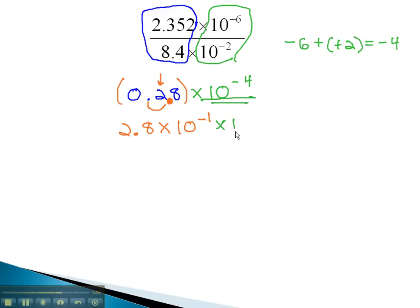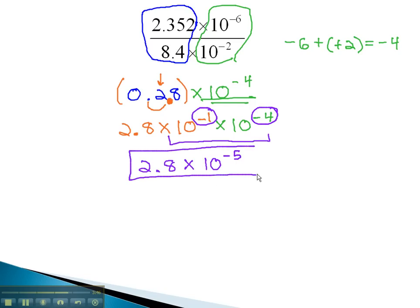We still have the times 10 to the negative 4 at the end, and we can finally combine the tens together using our exponent properties. This gives us 2.8 times 10, and when we add the exponents, negative 1 and negative 4, we get negative 5. 2.8 times 10 to the negative 5th is our final answer in scientific notation.